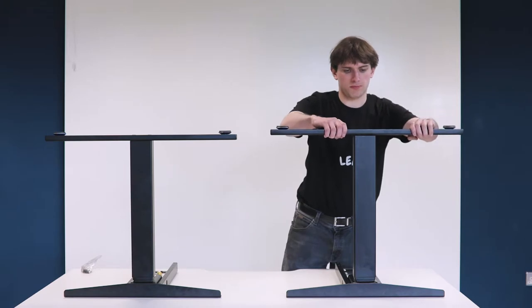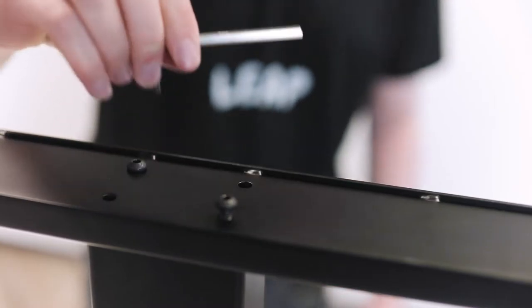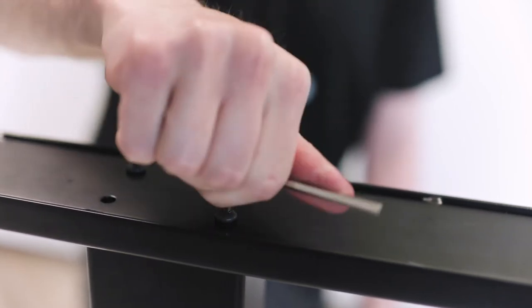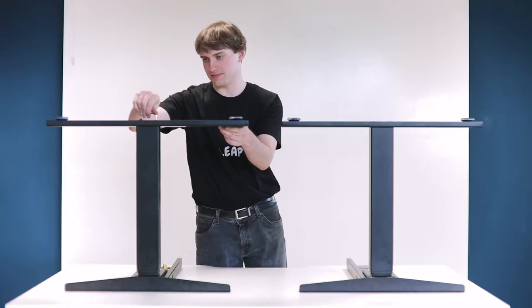Next, take the feet and tighten them onto the legs in a crisscross pattern with the allen key provided. Please ensure that the longer ends of the feet are facing the same way as the longer ends of the side bracket.